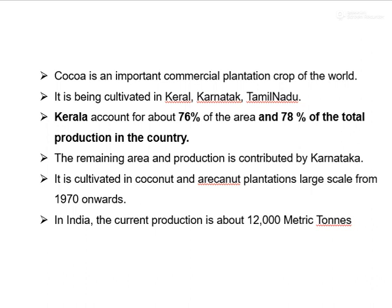Cocoa is an important commercial plantation crop of the world, mostly cultivated in Kerala, Karnataka and Tamil Nadu. Kerala accounts for about 76% of area and 78% of total production in the country. The remaining area and production is contributed by Karnataka. Cocoa is also intercropped with coconut and areca nut on a large scale from 1970 onwards. In India, the current production is about 12,000 metric tons.